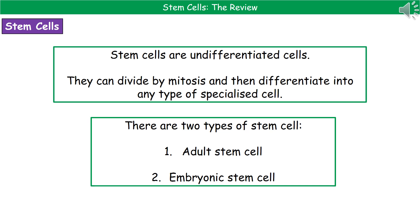When we're talking about stem cells, we're talking about undifferentiated cells — ones that haven't become specialised. Stem cells can divide by mitosis and then differentiate into any type of specialised cell. This is kind of our building block to make all the different types of cell within the body.